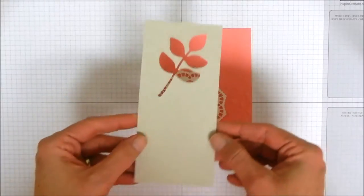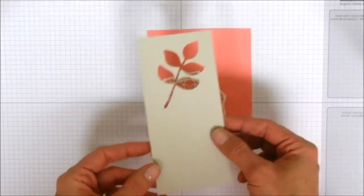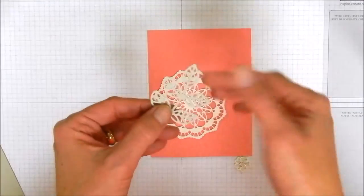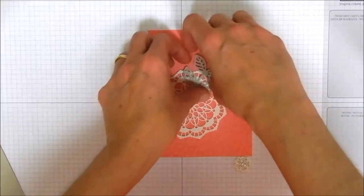We're also going to need a scrap of Sahara sand and as you can see we're going to cut a piece out of it. Now this is what we cut out.